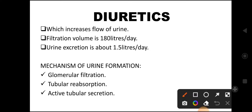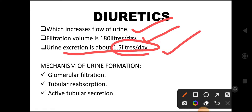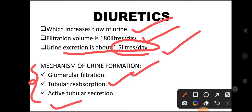Generally, diuretics are drugs which increase the flow of urine. In the body, 180 liters per day is filtered, but only 1.5 liters per day is excreted, which means 99% of fluid in the body is reabsorbed into the blood. Urine formation occurs in three stages: first, glomerular filtration; second, tubular reabsorption; and finally, active tubular secretion.